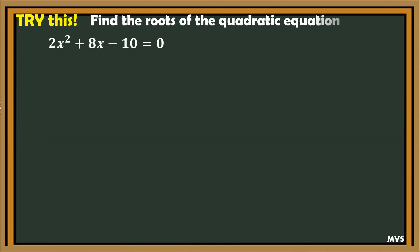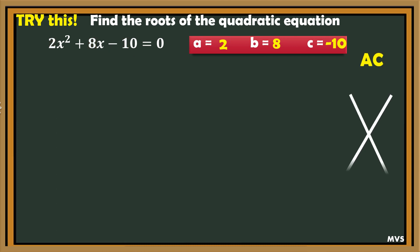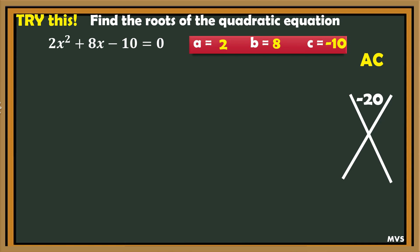Try this: find the roots of the quadratic equation 2x squared plus 8x minus 10 equals 0. What is the value of a, b, and c? The value of a is 2, the value of b is 8, and the value of c is negative 10. Next, using the AC method with the values of a, b, and c: what is the value of a? 2. How about c? Negative 10. How about the value of b? b is 8.